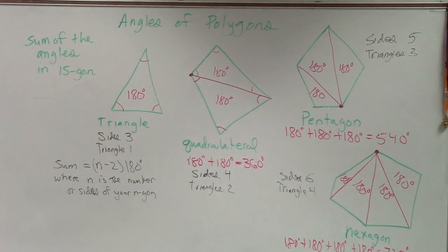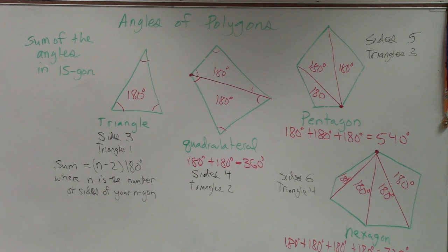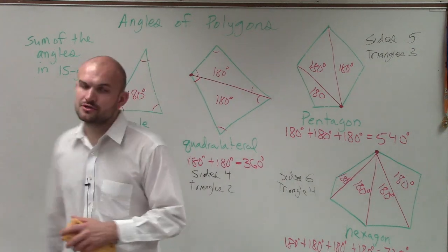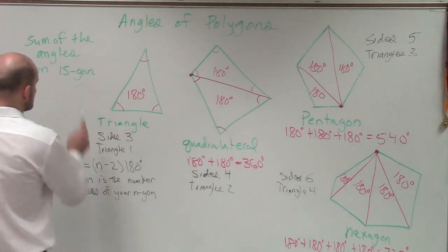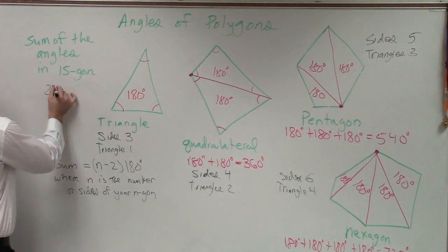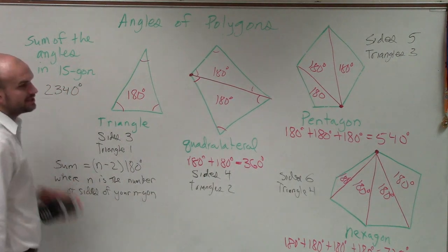All right, so I'll grab my lovely handy-dandy calculator, and I'll just do 15 minus 2, we know is 13. So I do 13 times 180, and I get 2,340 degrees.